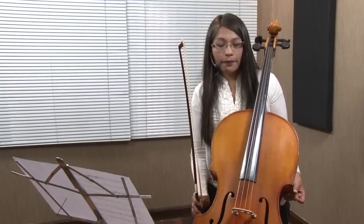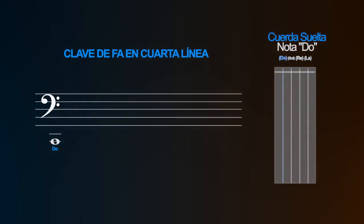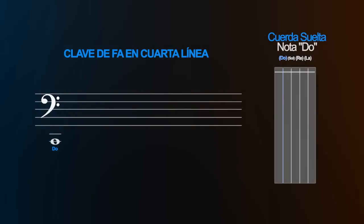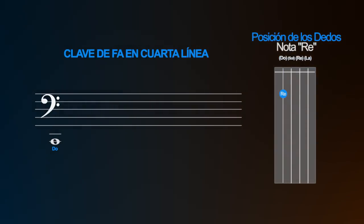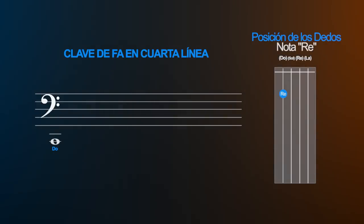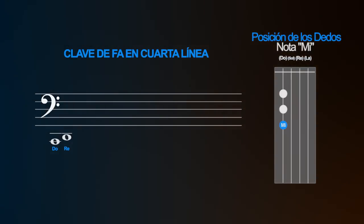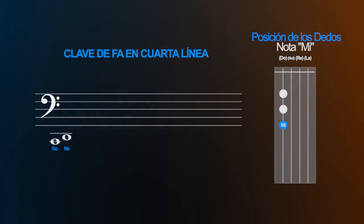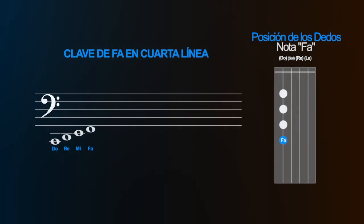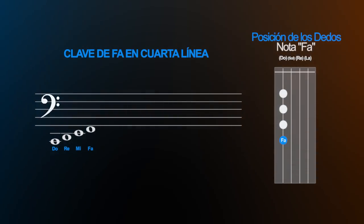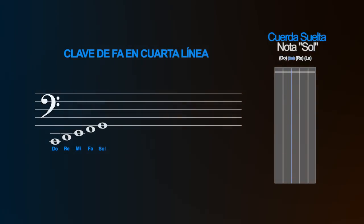Nuestra primera cuerda, que es la nota Do, está representada en la segunda línea adicional hacia abajo, que sería nuestra Do suelta. Seguidamente tenemos nuestra nota Re, que pisamos con el primer dedo, está entre la segunda y la primera línea adicional hacia abajo. Nuestra nota Mi está representada en la primera línea adicional hacia abajo. Nuestra nota Fa está antes de la primera línea del pentagrama. Nuestra nota Sol, cuerda suelta al aire Sol, está en la primera línea del pentagrama.